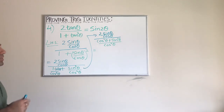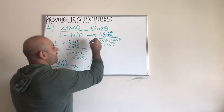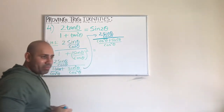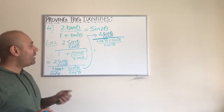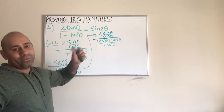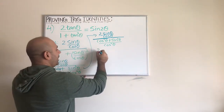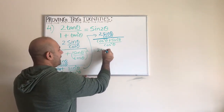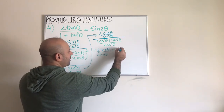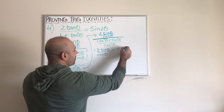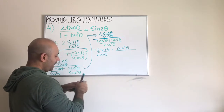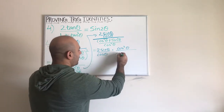Now we change this big division into a multiplication. When we convert it to multiplication, the denominator fraction flips. So it becomes two sine theta over cosine theta, times cosine squared theta over cosine squared theta plus sine squared theta.